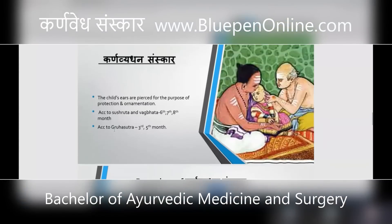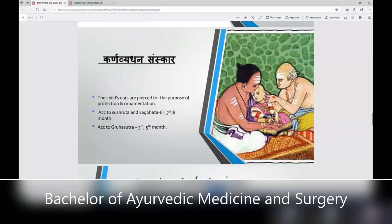Karnavaitana samskara is a procedure where the child's ears are pierced for the purpose of protection as well as ornamentation. According to Sushruta and Vakvada, it is done on the 6th, 7th, or 8th month.